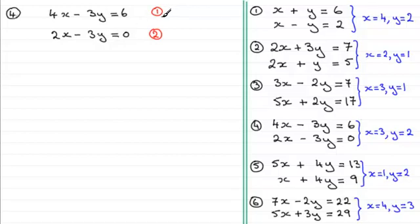So we can either do equation 1 subtract equation 2 or equation 2 subtract 1. Makes no difference. I'm going to do equation 1 subtract equation 2. Leave it to you to experiment with 2 take away 1. You should end up with exactly the same value for x as I do.